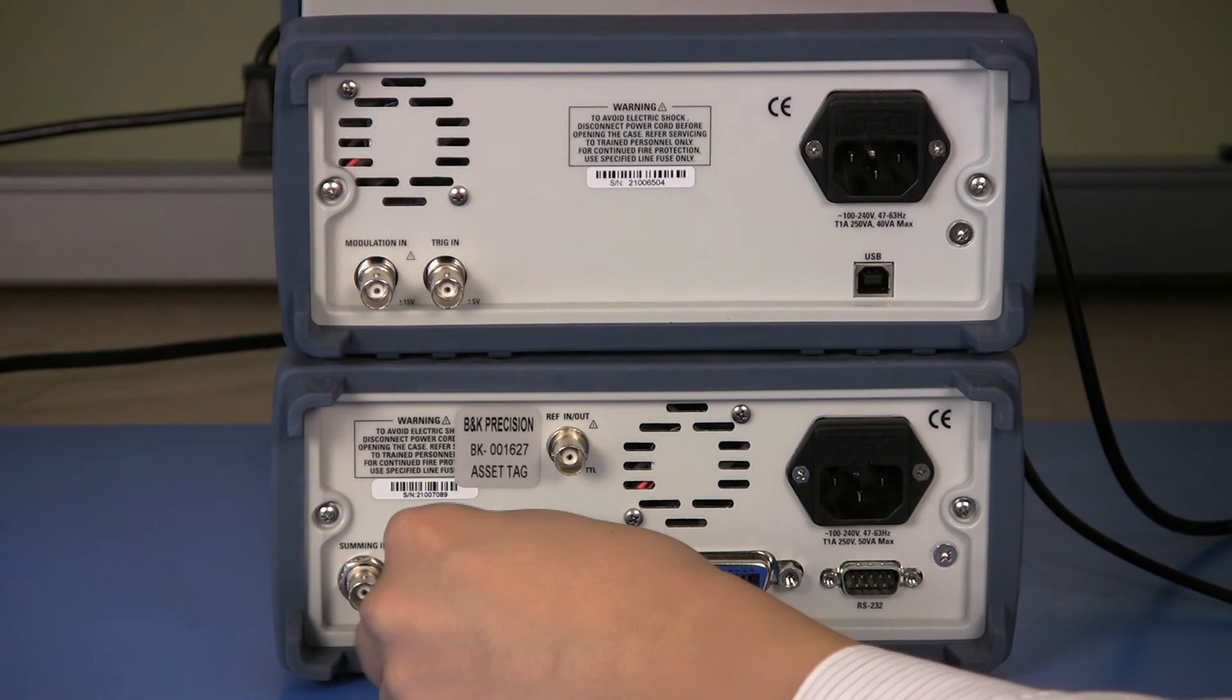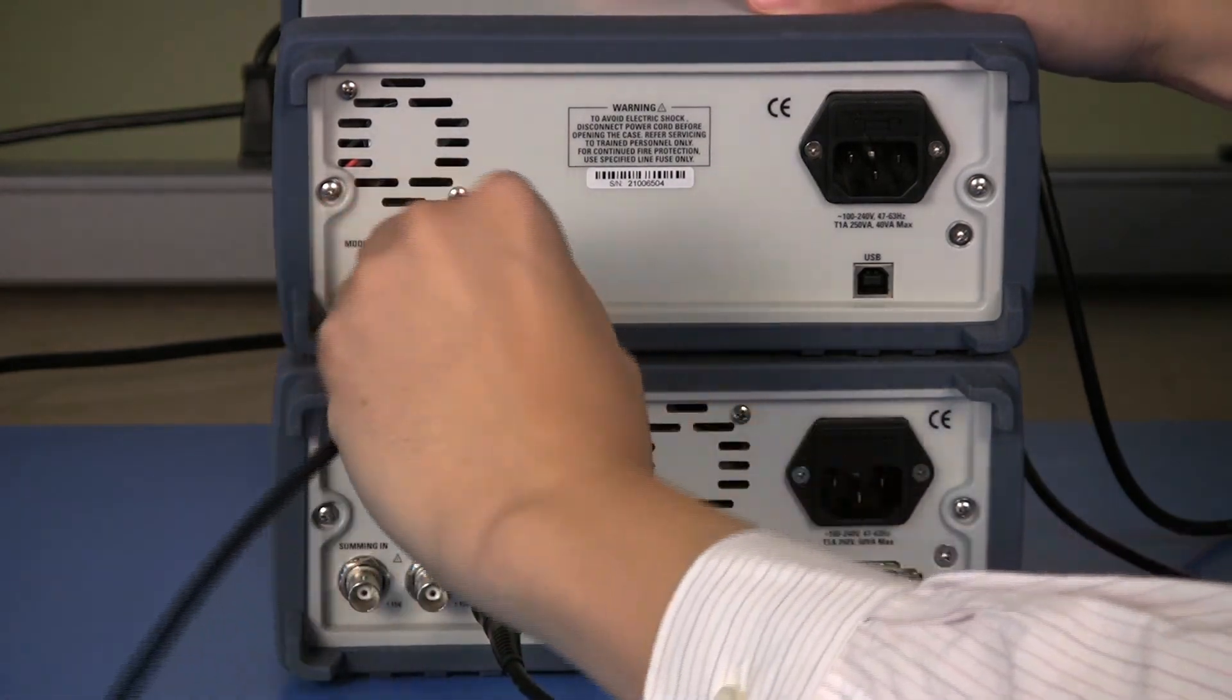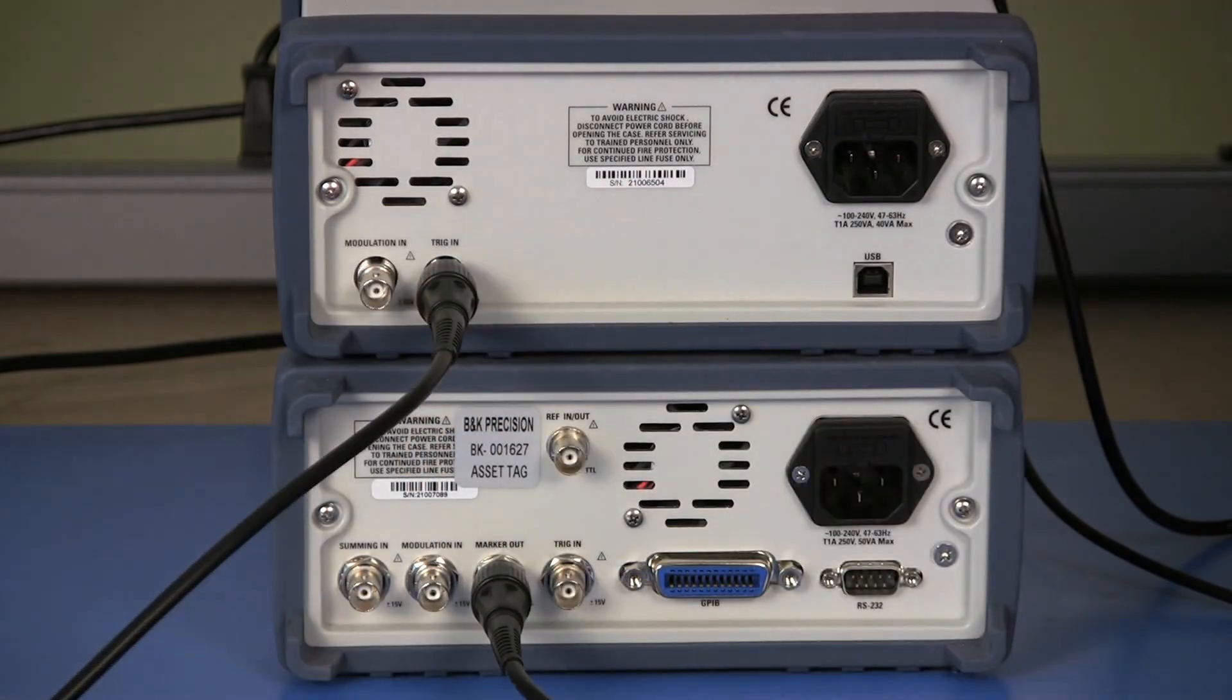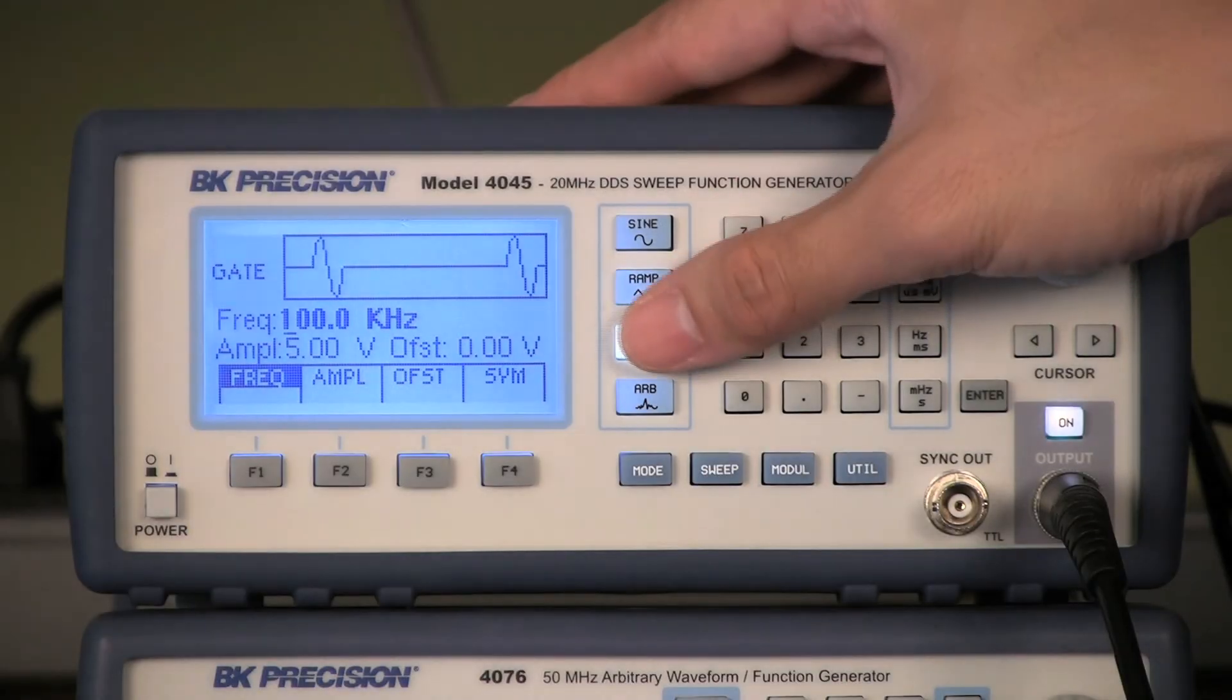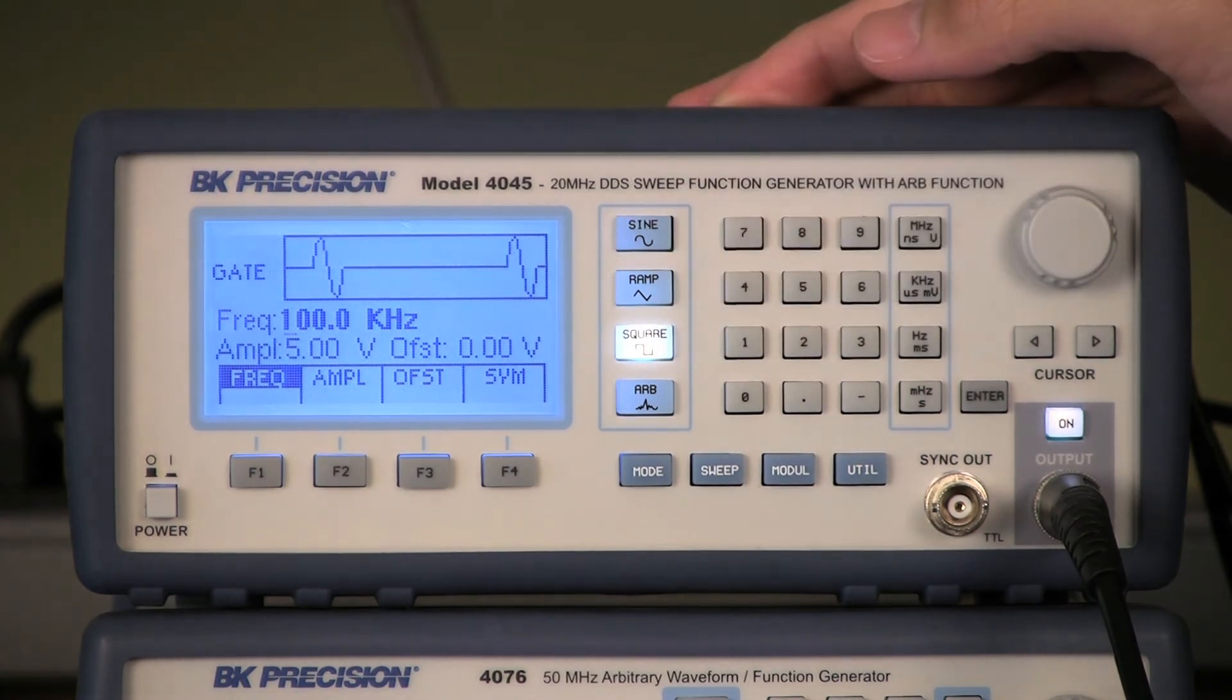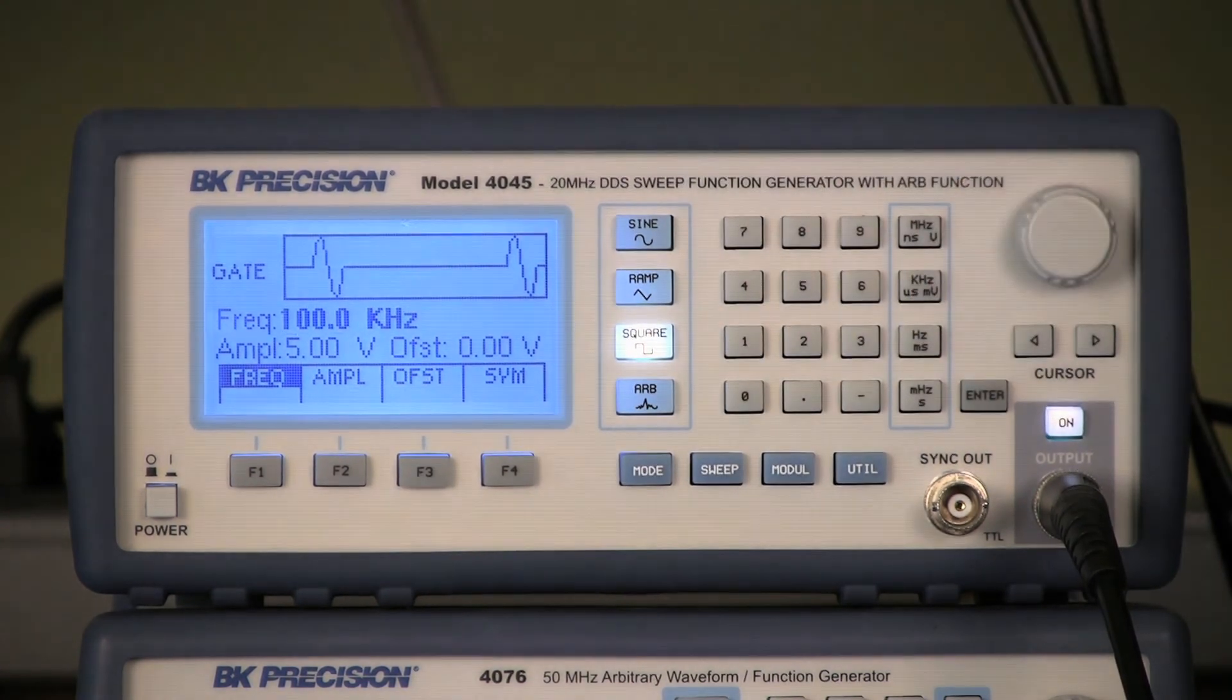Now I will connect the marker output to the trigger in BNC of the 4045. On the 4045, I will select Square function because I want a clock signal, and I will set it to 100 kHz frequency for demonstration. Amplitude is kept at 5V.